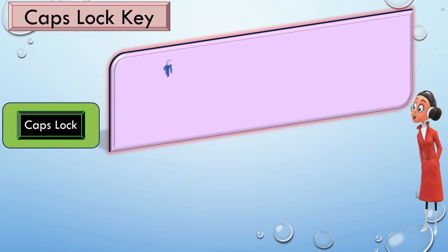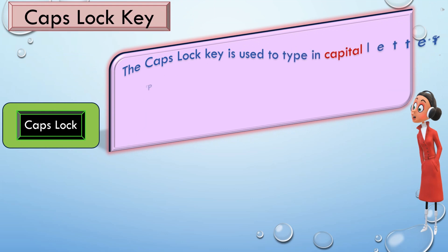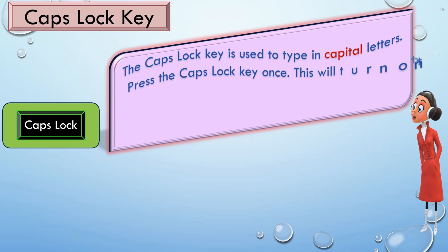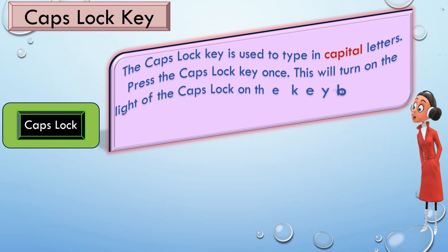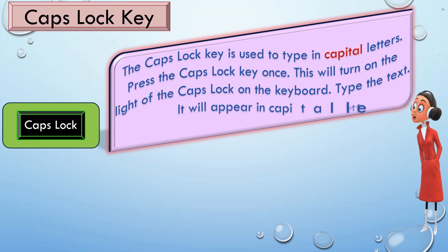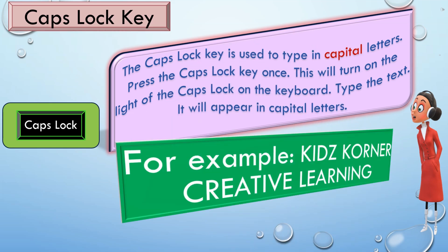Caps Lock Key. The caps lock key is used to type in capital letters. Press the caps lock key once — this will turn on the light of the caps lock on the keyboard. Type the text and it will appear in capital letters. For example, my channel name, Kids Corner Creative Learning, is written in capital letters.